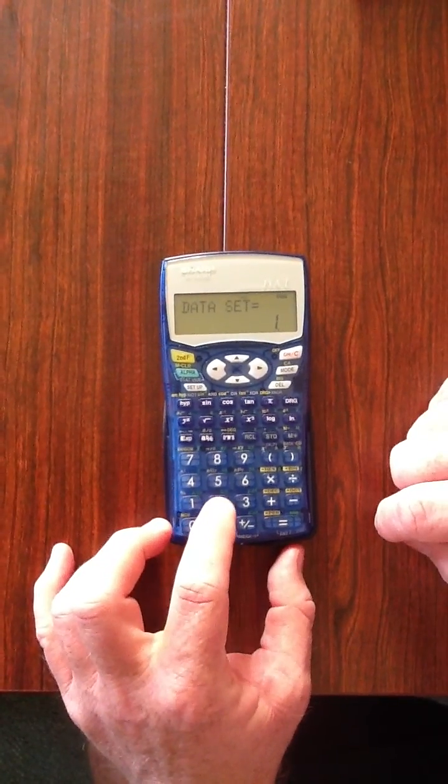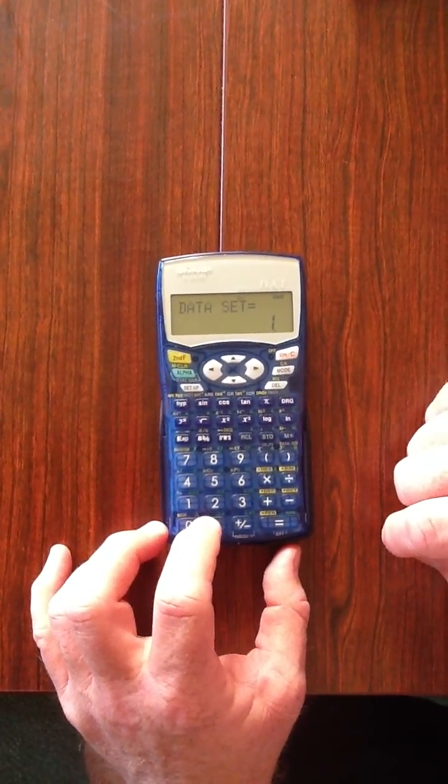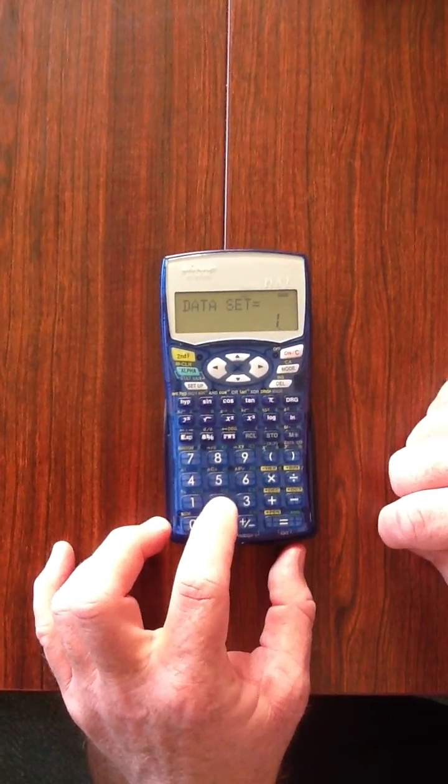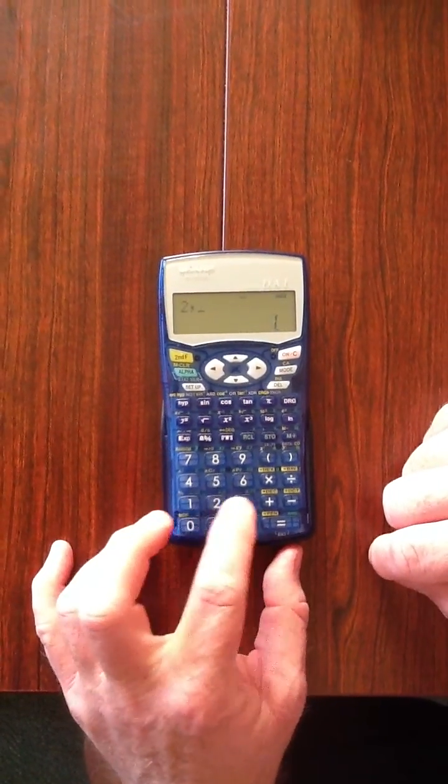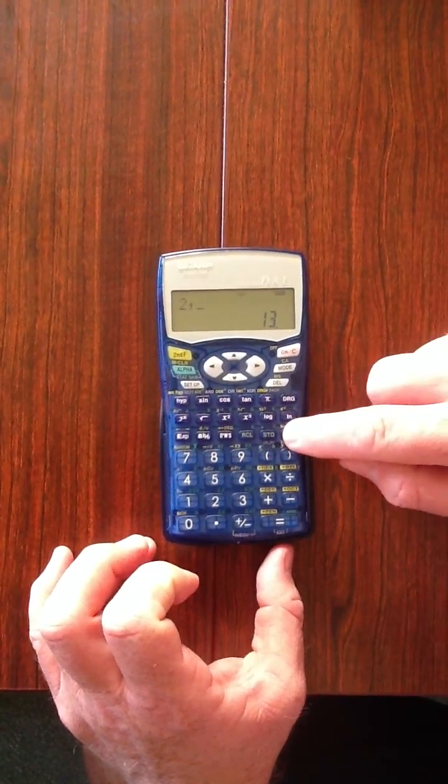Okay we've got thirteen scores of two, so we go two, STO, thirteen, M plus.